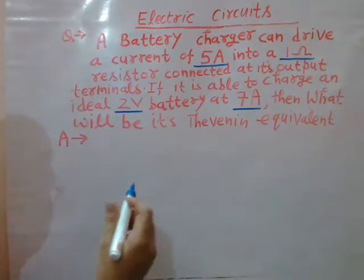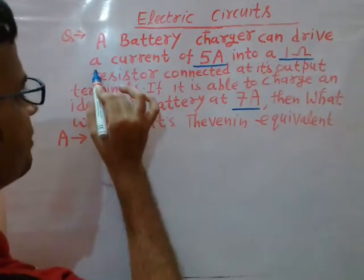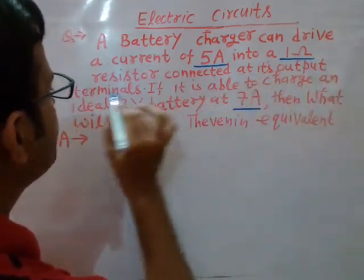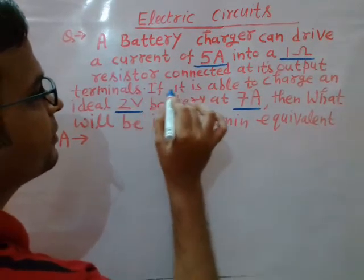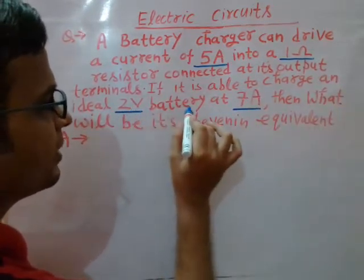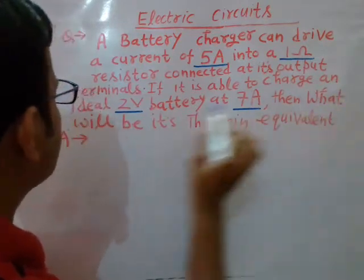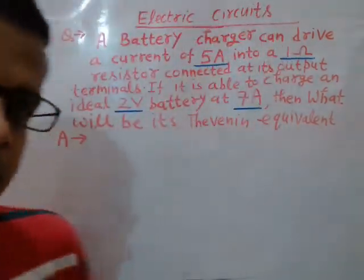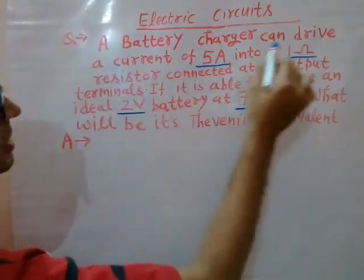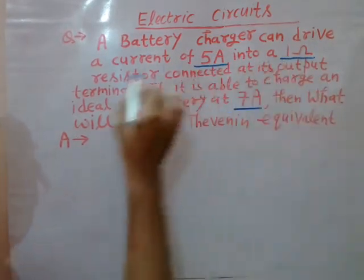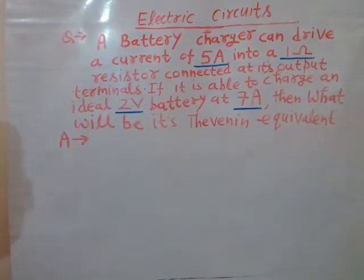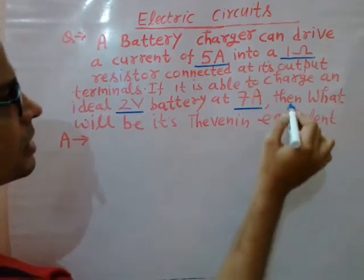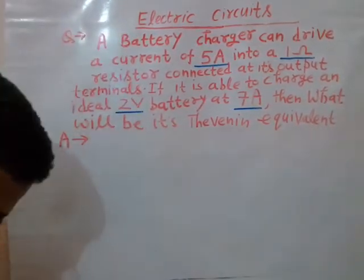The question statement is: a battery charger can drive a current of 5 ampere into a 1 ohm resistor connected at its output terminals. If it is able to charge an ideal 2 volt battery at 7 ampere, then what will be its Thevenin's equivalent circuit? That is what you have to find out.